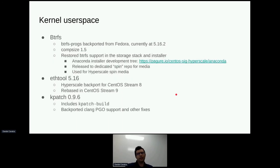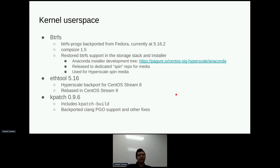On the user space side, we backport Btrfs tools from Fedora and try to keep them up to date — currently at 5.16. We've also added a build of CompSize, which is a handy tool if you're using file system compression to see the size of compressed files. And as part of the work for the live DVD spins, we've restored Btrfs support in the storage stack and the installer so that a new system can be installed directly on a Btrfs root drive.